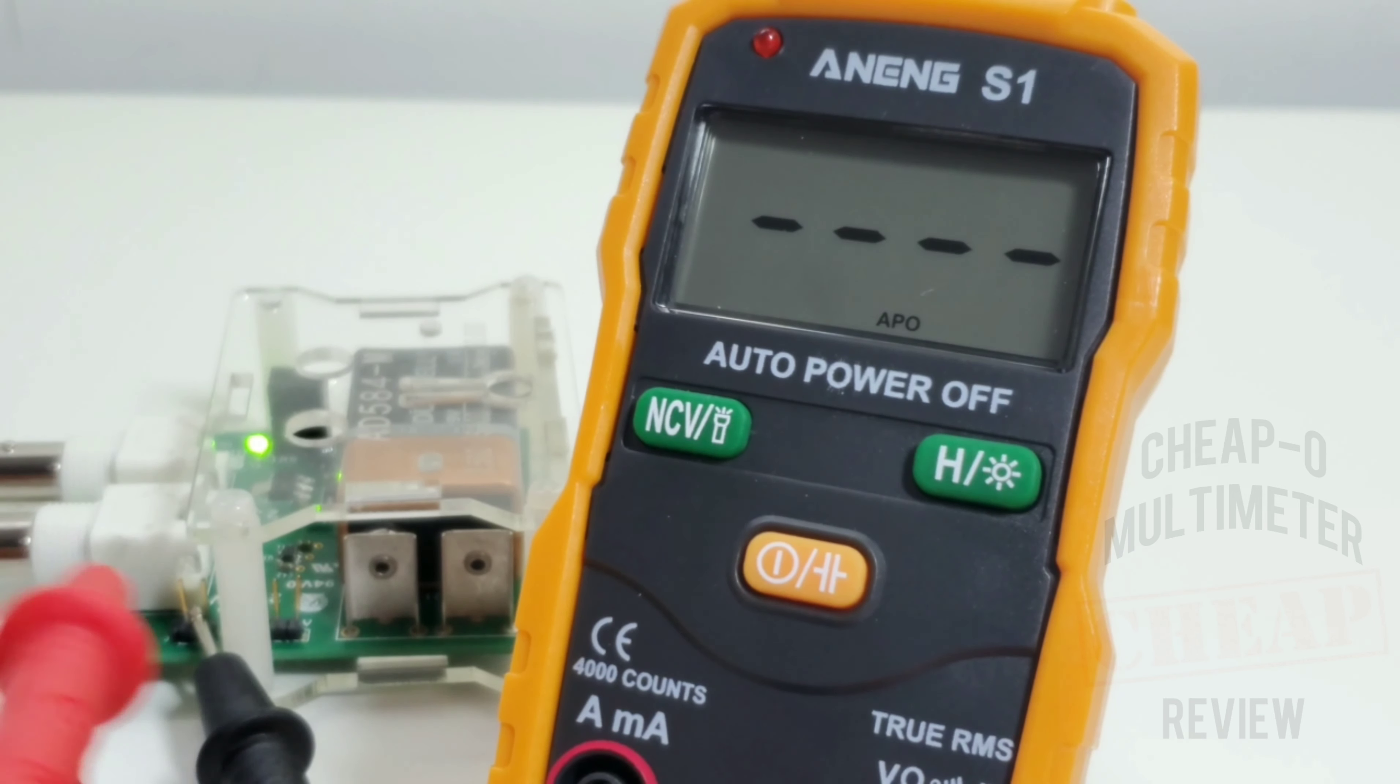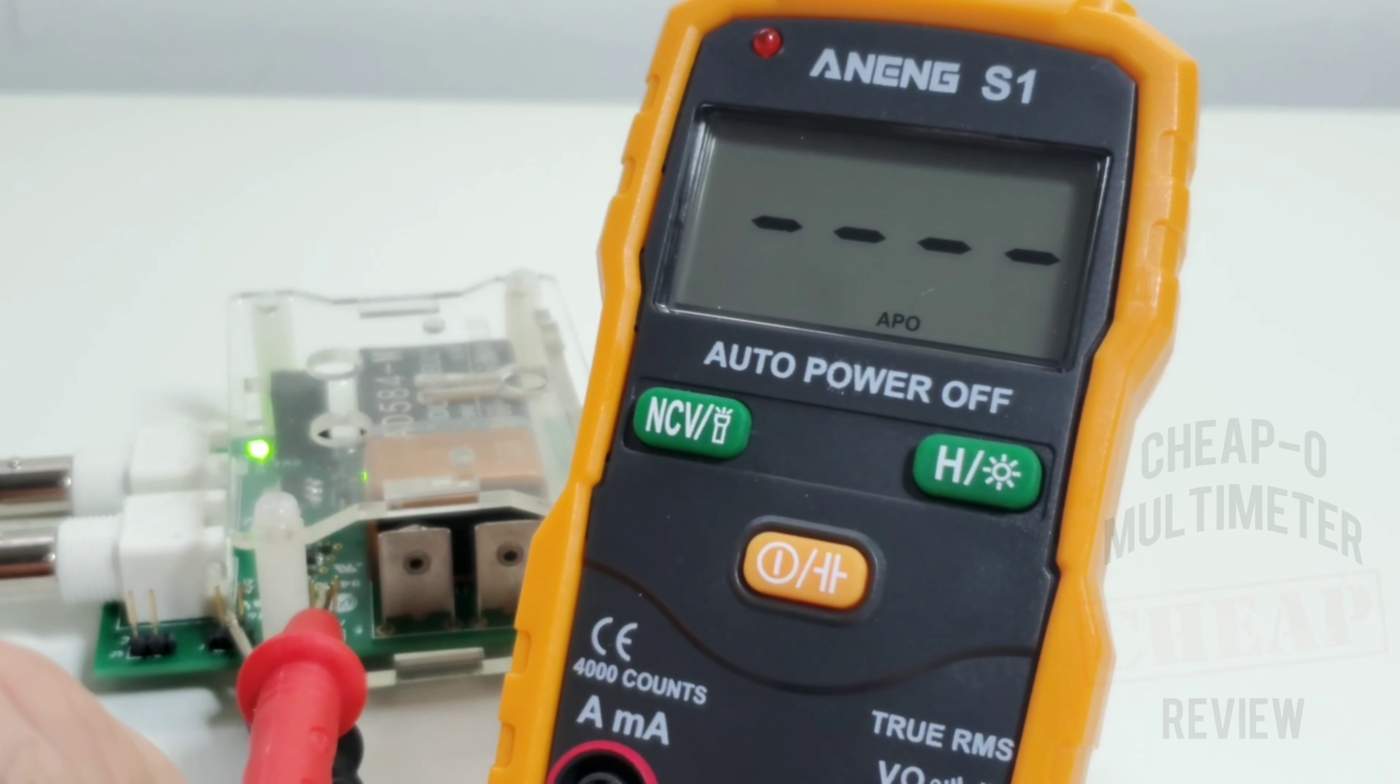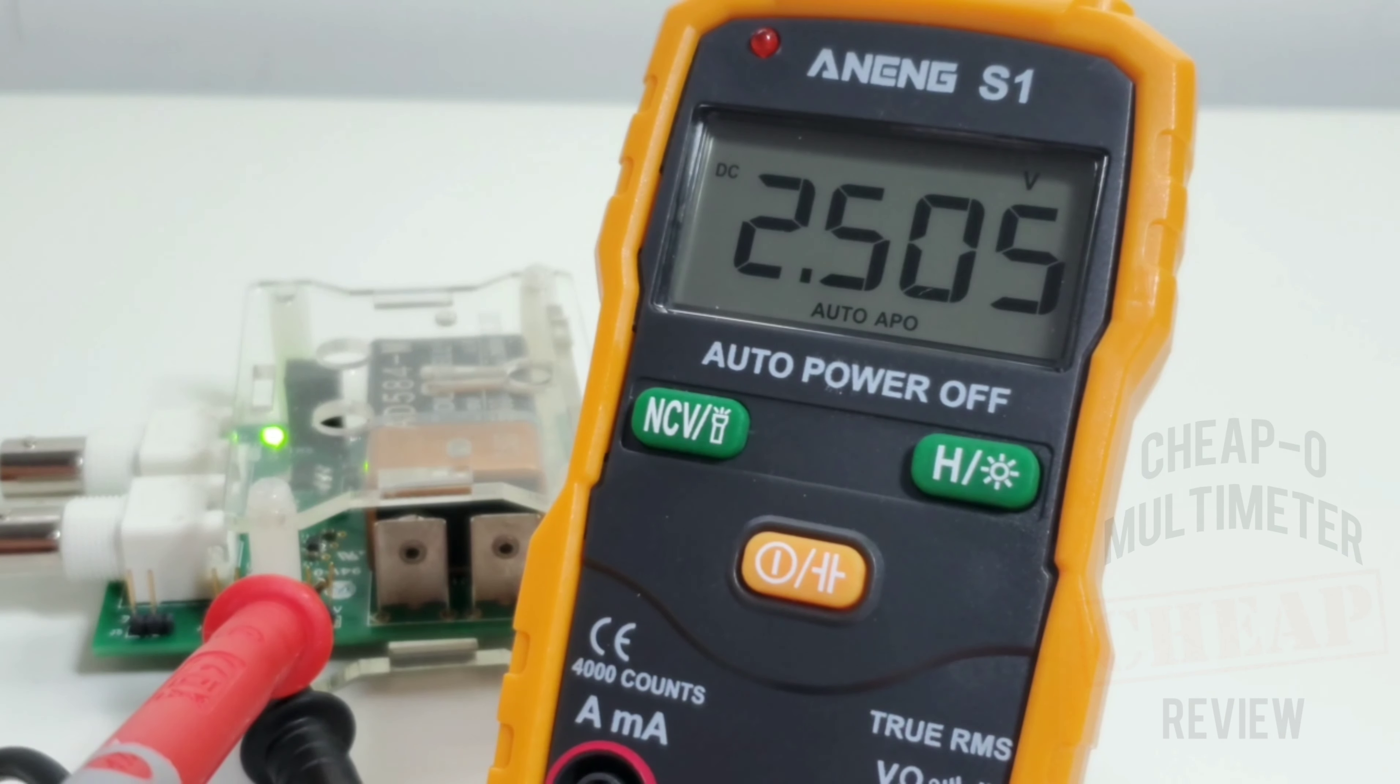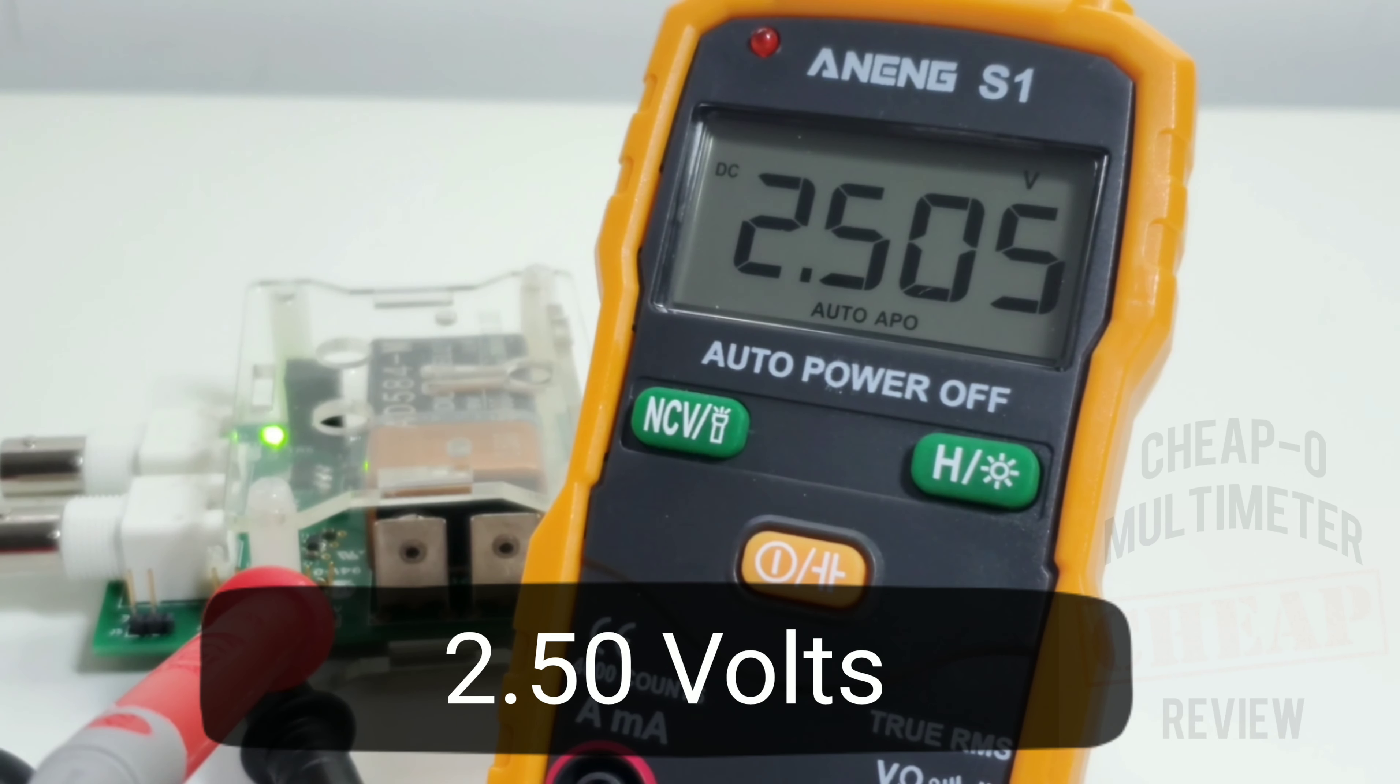So we're going to negate that 250 millivolt and we're going to go right up to 2.50 volts. Let's see what happens here. Here we go, and yeah we are okay in that department, 2.50 volts spot on. So that is once again another problem with these so-called smart multimeters, is the fact that that low voltage resolution is really not very good.